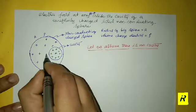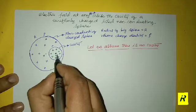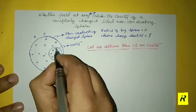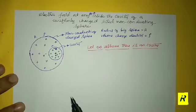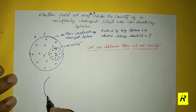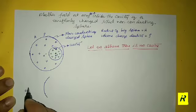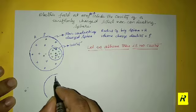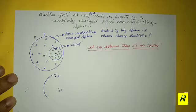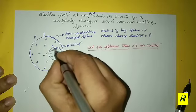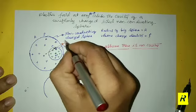We have point O and point O dash. There exists some point P somewhere inside. At point P, the electric field due to the complete sphere acts along the line from O to P.